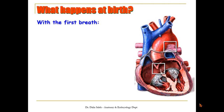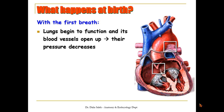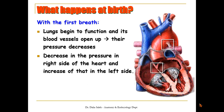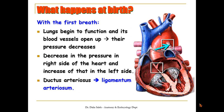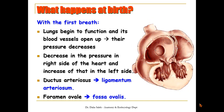At birth, the baby takes its first breath and the lungs begin to function. Their blood vessels open up and resistance decreases, so the right ventricle no longer faces high resistance. Blood returning from the lungs increases pressure on the left side of the heart. This leads to closure of the ductus arteriosus, which later transforms into the ligamentum arteriosum. The septum primum and secundum of the interatrial septum fuse and the foramen ovale transforms into the fossa ovalis.